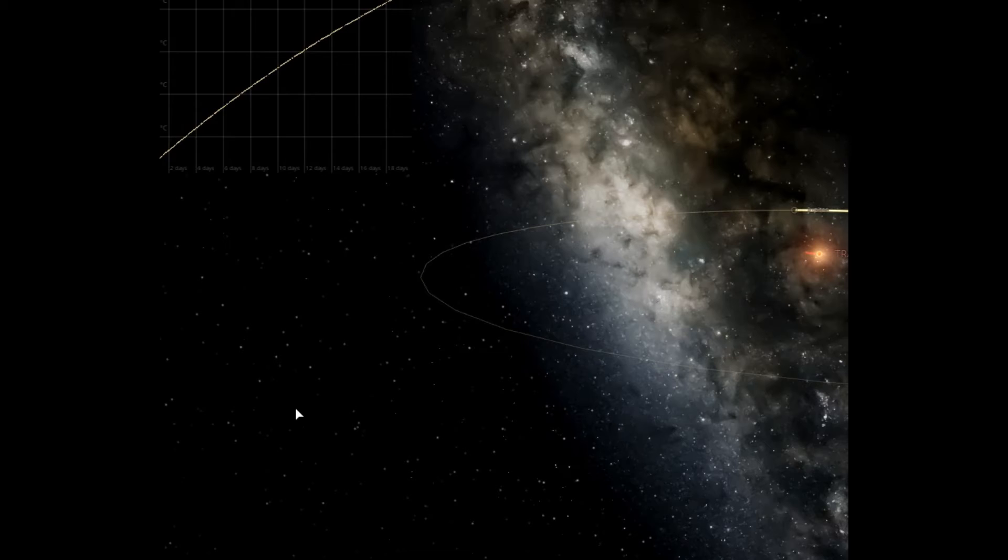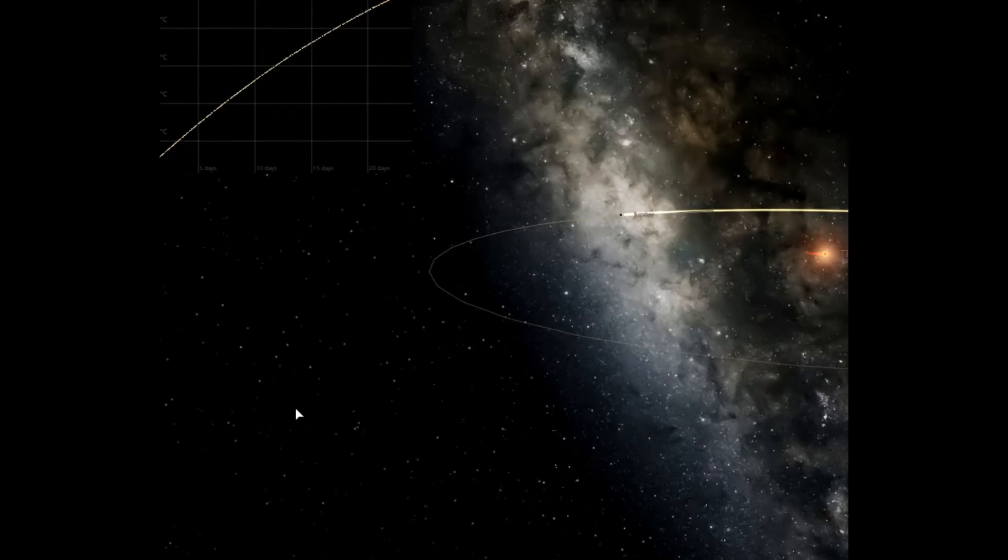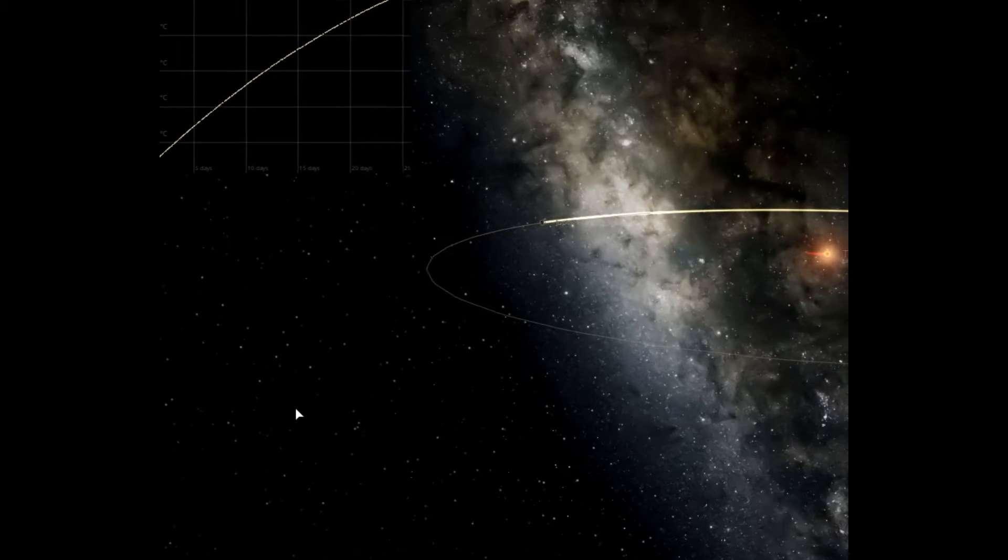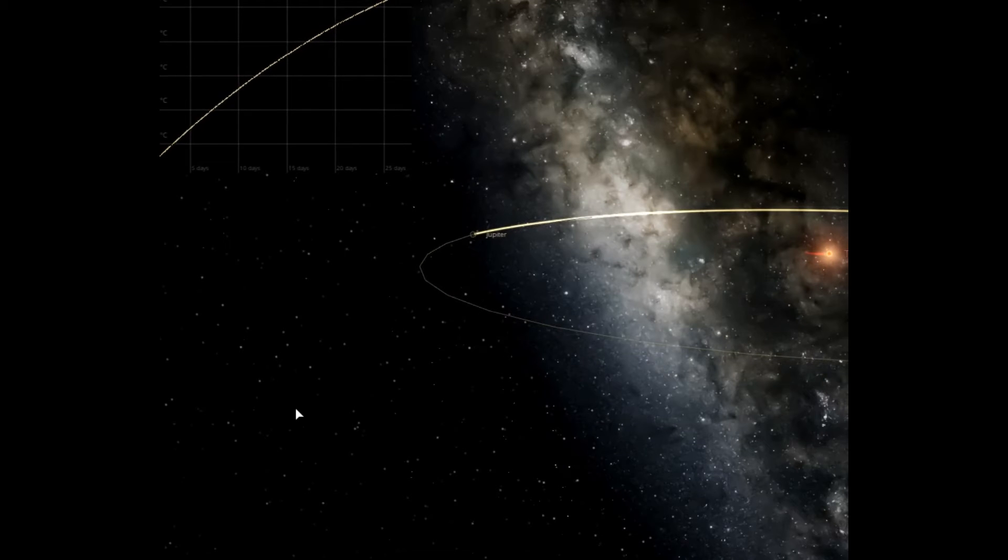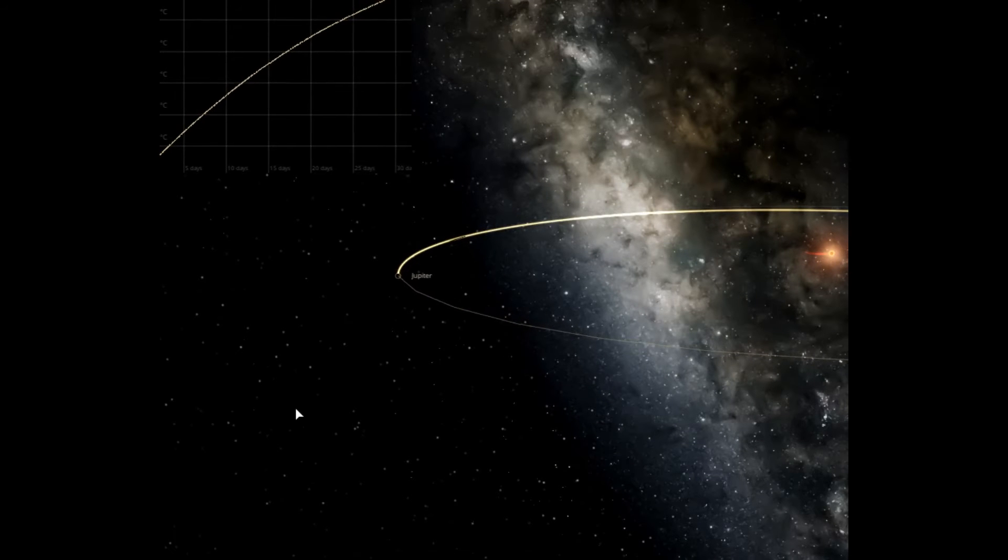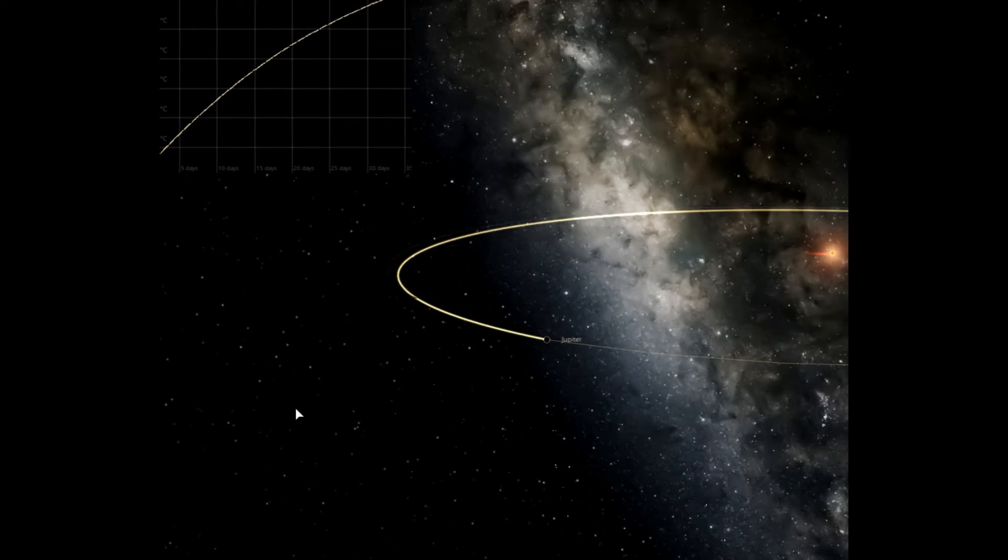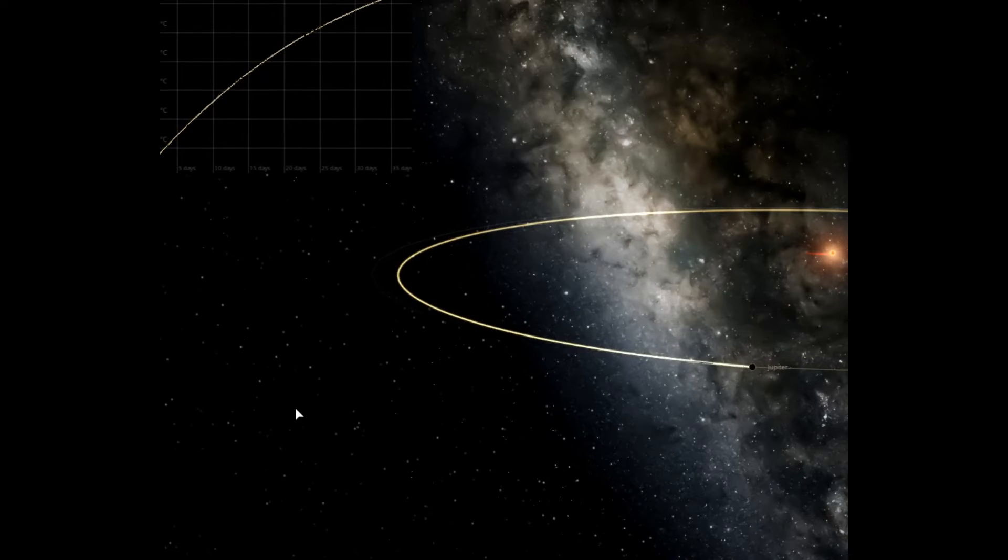So some stats about TRAPPIST-1. It is an M8V class ultracool red dwarf star about 40 light-years away from Earth in the constellation of Aquarius. It is orbited by seven Earth-sized terrestrial planets, all of them orbiting TRAPPIST-1 closer than Mercury does from our Sun. It is about 7.6 billion years old.